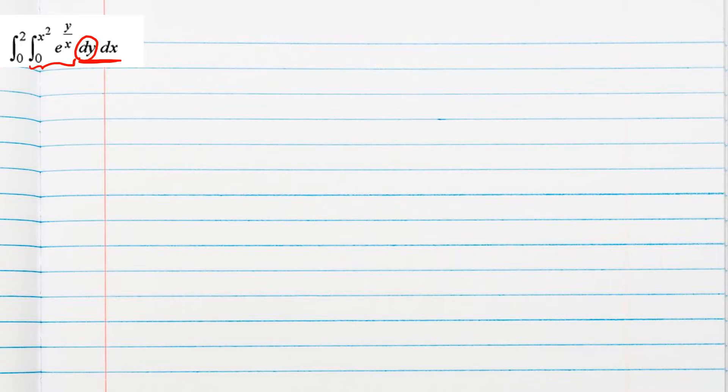So 0 to 2, we can write aside e power y by x, 0 to x square dy. We can solve this first, and then after that we can integrate with respect to x. Now see, if we are taking integration with respect to y, so x will be treated as constant.